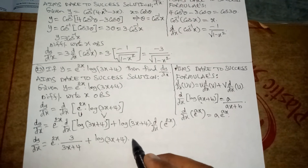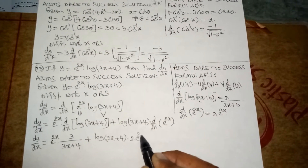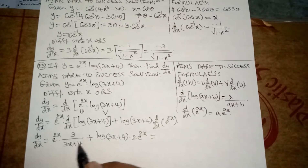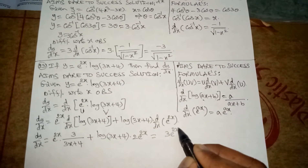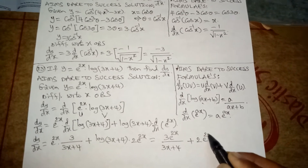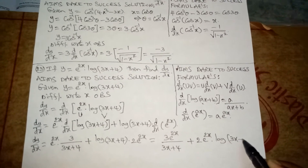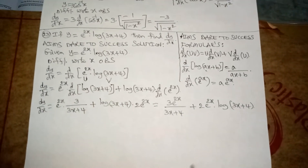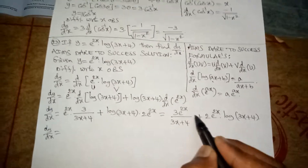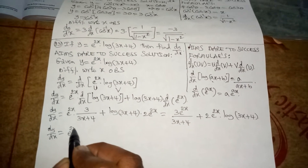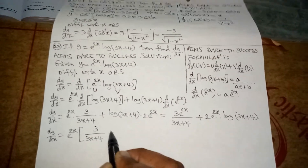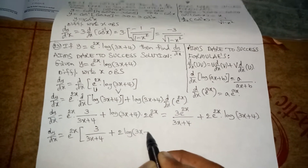Applying that formula gives 2 · e^(2x). So this can be written as: 3 · e^(2x)/(3x + 4) plus 2 · e^(2x) · log(3x + 4). For simplification, take e^(2x) as a common factor. So dy/dx equals e^(2x) · [3/(3x + 4) + 2·log(3x + 4)].